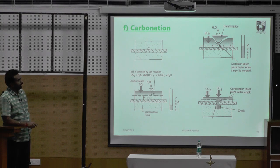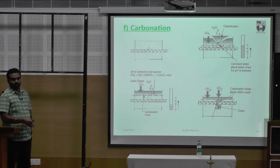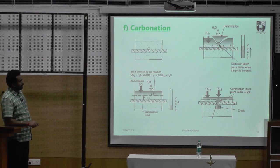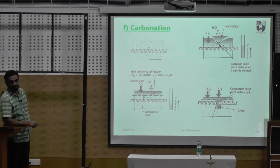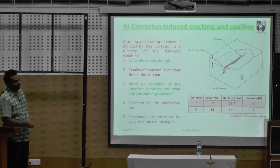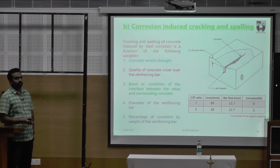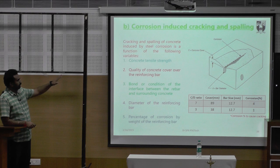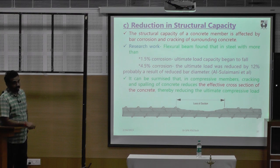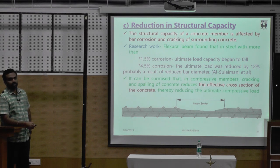Once the pH value gets reduced, day by day — whatever I am telling now will not happen suddenly, not tomorrow — as the days and years increase, first there will be delamination. Then the pH value gets reduced further and corrosion takes place. When these issues occur in the structure, the remedy involves conventional cement, coarse aggregate, and fine aggregate. There is a ratio of cover bar thickness to the percentage of corrosion, and a reduction in structural capacity due to loss of reinforcement section, reducing the ultimate load capacity.